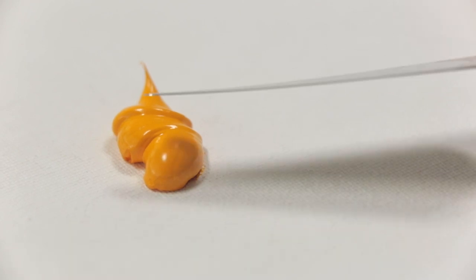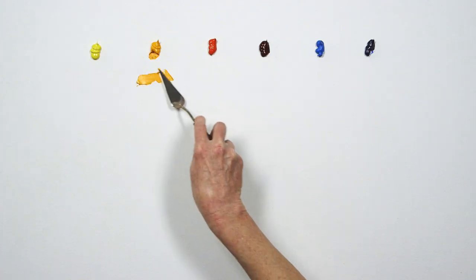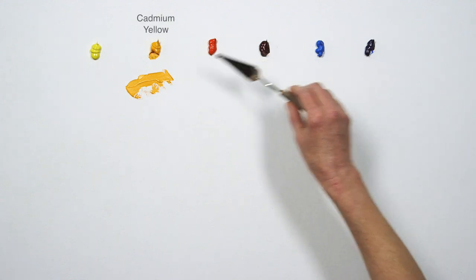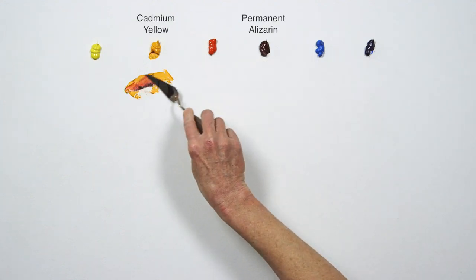So I'll first mix an orange using one of the pairs of yellow and red, and then add one of my blues in small amounts. This mixture is Cadmium Yellow plus Permanent Alizarin and I'm adding Ultramarine.